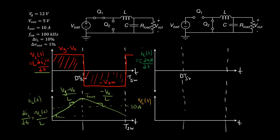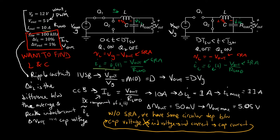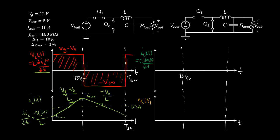Now we have the inductor current, so the next step is the capacitor current. Going back to the equations, the capacitor current is simply the inductor current minus the average inductor current (Vout/Rload) in both cycles. The inductor current minus its average is just this waveform shifted down by 10 amps. So for the buck converter, we literally copy the inductor current but center it at zero — a triangle wave centered at zero with two different slopes.